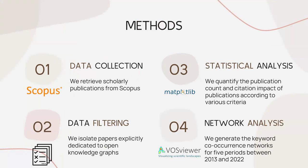We will do this by retrieving scholarly publications about the topic from Scopus, the bibliographic database. Then we will verify all the retrieved publications by hand to eliminate odd ones. After that, we will use Matplotlib to create several plots about the characteristics of the publications. Finally, we will study the evolution of the topical coverage of this research field by constructing keyword co-occurrence networks for five periods between 2013 and 2022 using an open-source software called VOSviewer.